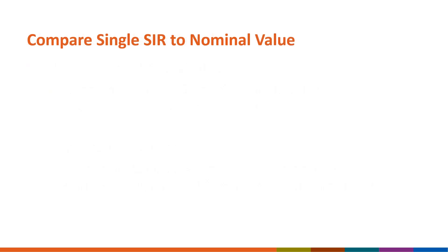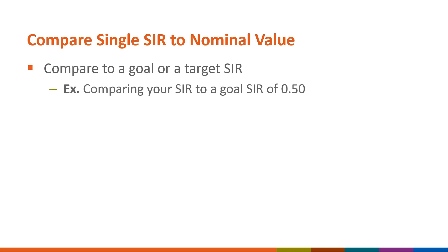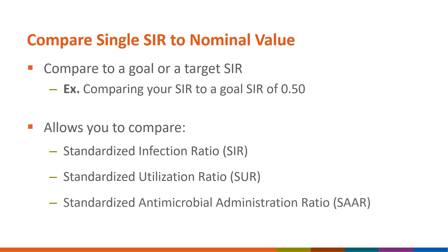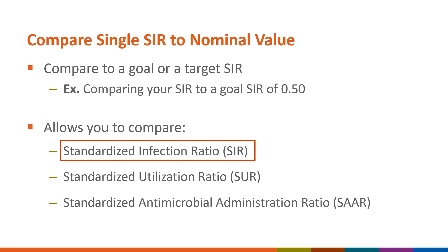The Compare Single SIR to Nominal Value option should be used to compare your facility's standardized infection ratio, or SIR, to a nominal value, such as a goal or target SIR. For example, you would use this option if you wanted to compare your hospital's SIR to a goal SIR of 0.50. This option can also be used to compare a standardized utilization ratio, or SUR, to a nominal SUR, or a standardized antimicrobial administration ratio, or SAR, to a nominal SAR. In this QuickLearn, we will look at comparing a facility's SIR to the facility's target SIR.